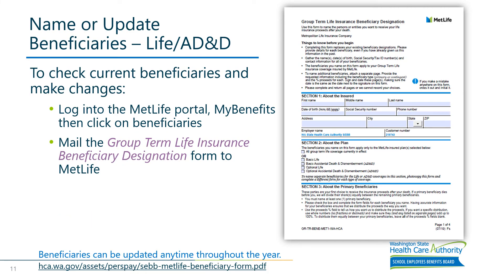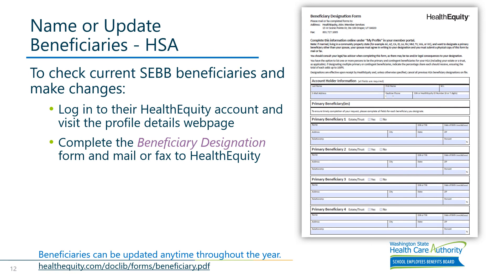When it comes to naming and updating beneficiaries for life and AD&D, you can check your current beneficiaries and make changes by logging into the MetLife portal under My Benefits and clicking on Beneficiaries, or by mailing the Group Term Life Beneficiary Designation Form to MetLife. Employees should also name and update their beneficiaries for their health savings account. To check current HSA beneficiaries and make changes, log in to their Health Equity account and visit the profile details webpage, or complete the Beneficiary Designation Form and mail or fax it to Health Equity.